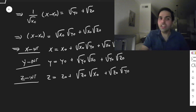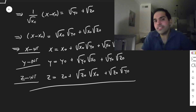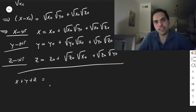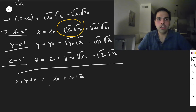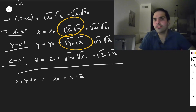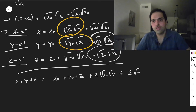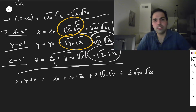All right, those are our intercepts, so now let's add them together. This is quite ugly, but let's see if things simplify. x + y + z equals x₀ + y₀ + z₀, and then there are cross terms: two copies each of √x₀·√y₀, √y₀·√z₀, and √x₀·√z₀. So we get: x₀ + y₀ + z₀ + 2√x₀·√y₀ + 2√y₀·√z₀ + 2√x₀·√z₀.